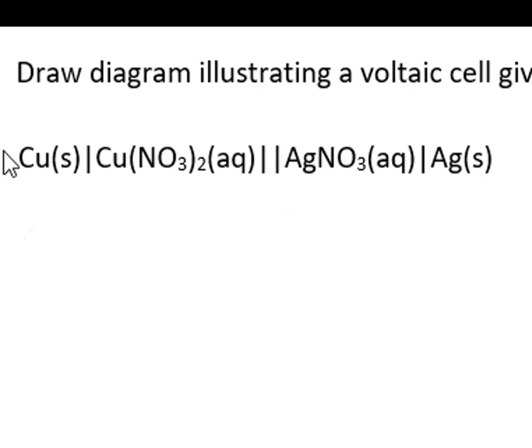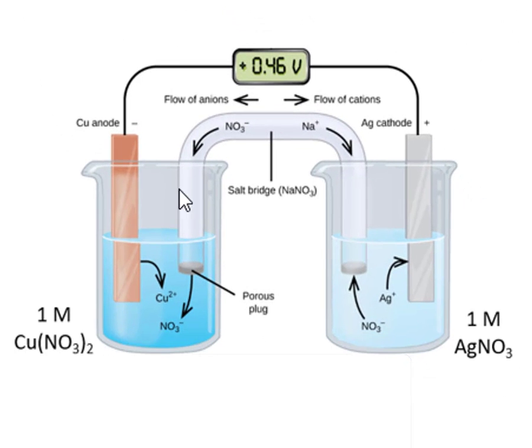By convention, the compounds to the left of the salt bridge represent the anode half reaction. The compounds to the right of the salt bridge represent the cathode half reaction.